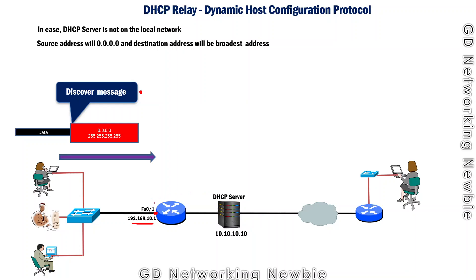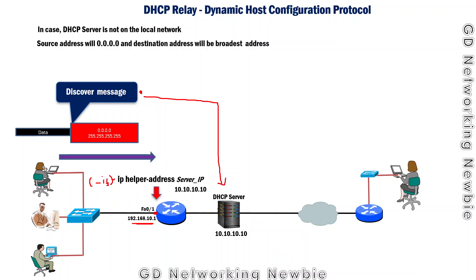To forward the Discover message to the DHCP server, we configure the router interface using the command 'ip helper-address' followed by the IP address of the DHCP server. We navigate to that interface using the interface command, then issue this command. Once configured, this interface will forward the Discover message to the specified DHCP server address.